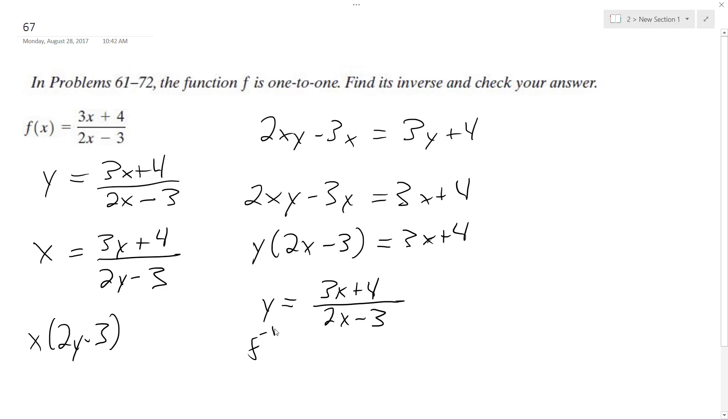So this is the inverse, let's test it. So f of f inverse is 3 times 3x plus 4 over 2x minus 3, plus 4, all over 2 quantity 3x plus 4 over 2x minus 3, minus 3.